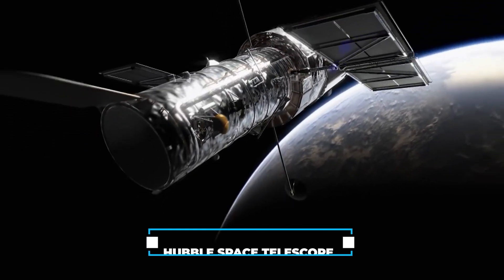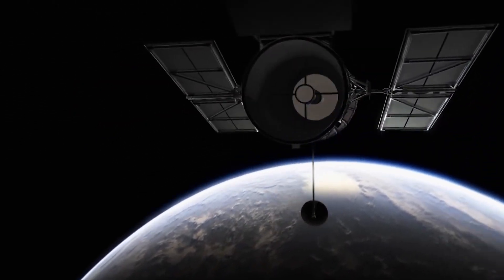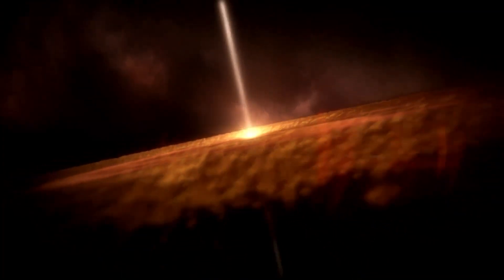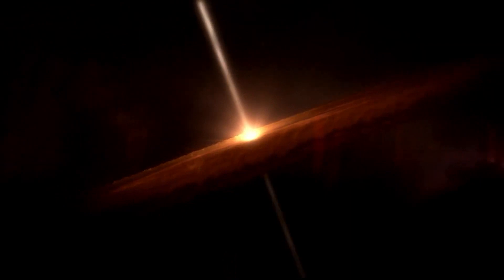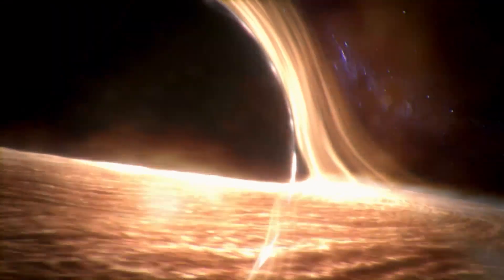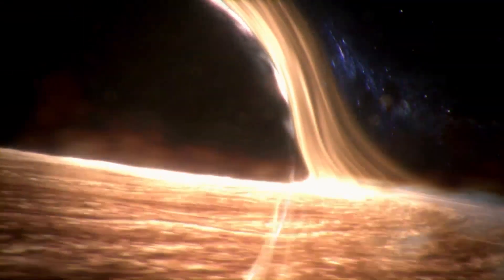When scientists use special telescopes, like the Hubble Space Telescope, to look at the AGN, they notice something unique. There are two bright spots instead of one, and the brighter one is a little off to the side. This brighter spot is where the supermassive black hole is.